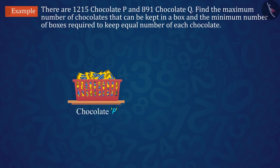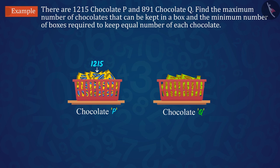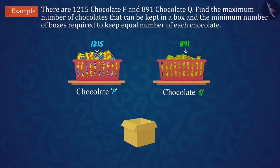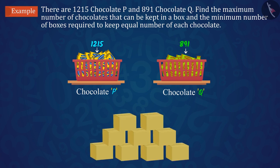The number of chocolates P and chocolate Q are 1215 and 891 respectively. What is the maximum number of chocolates that can be kept in a box? And how many minimum boxes are required to keep equal number of each chocolate?